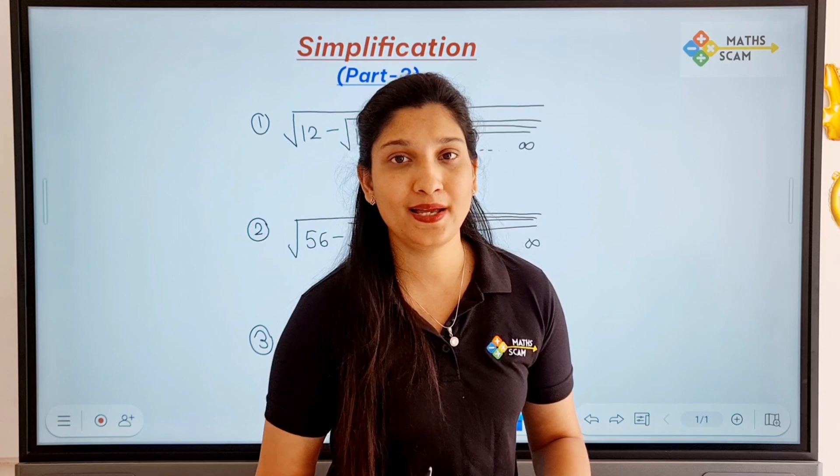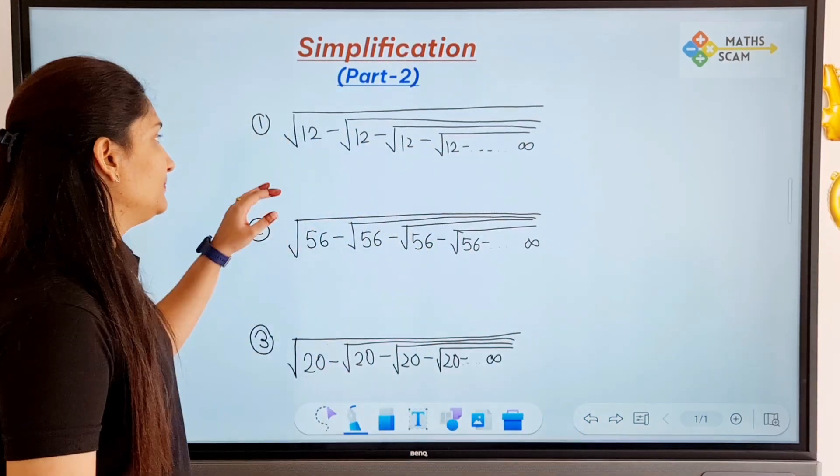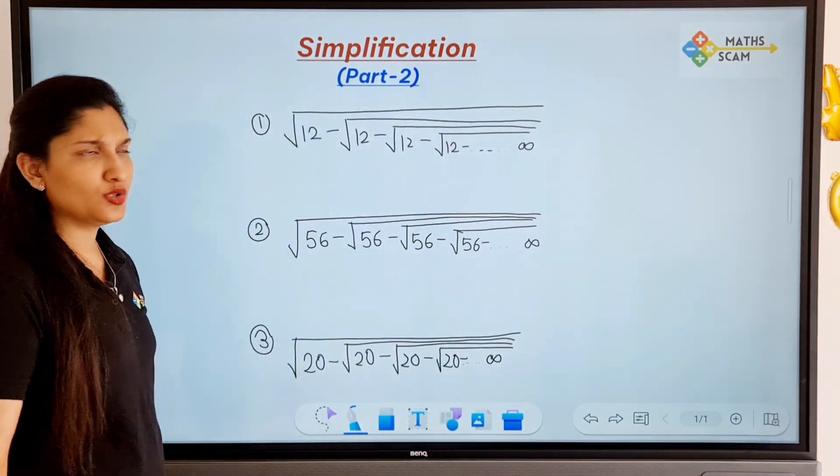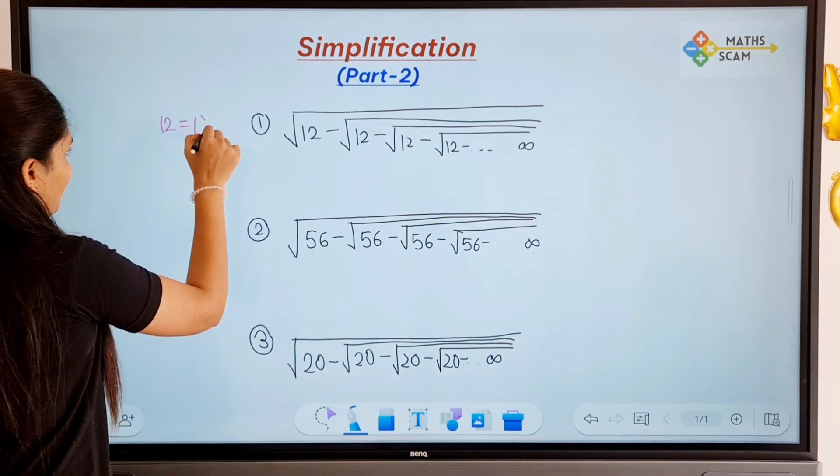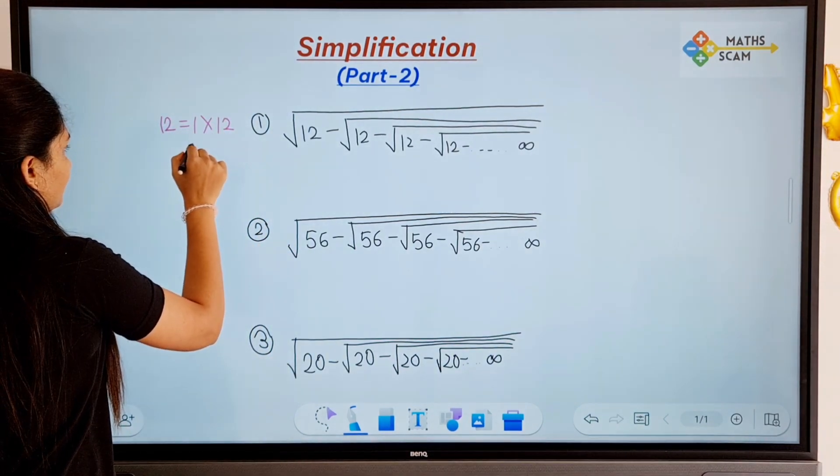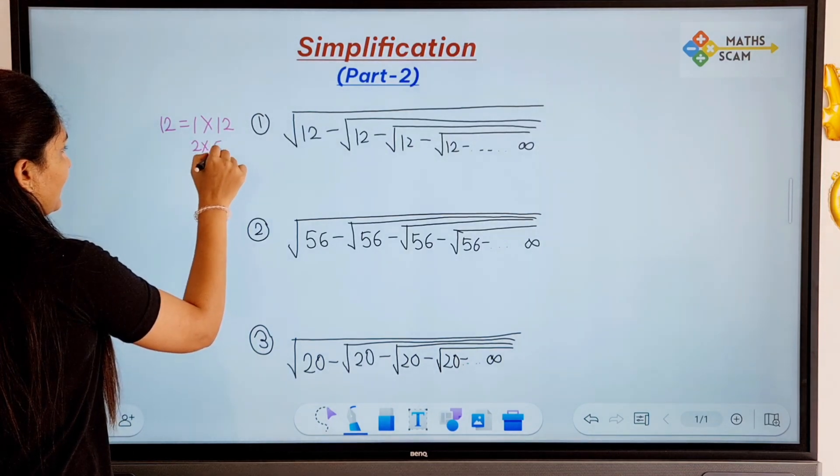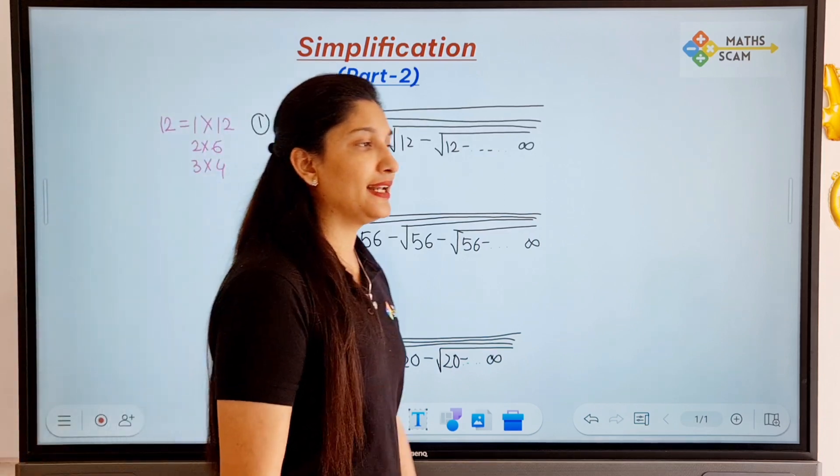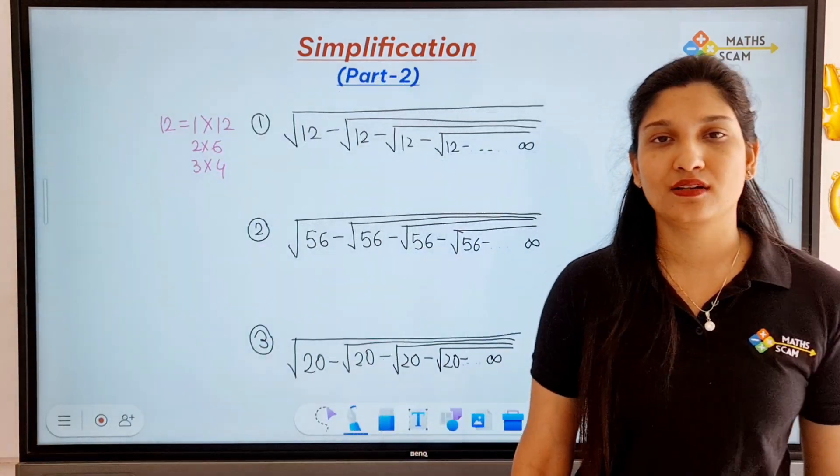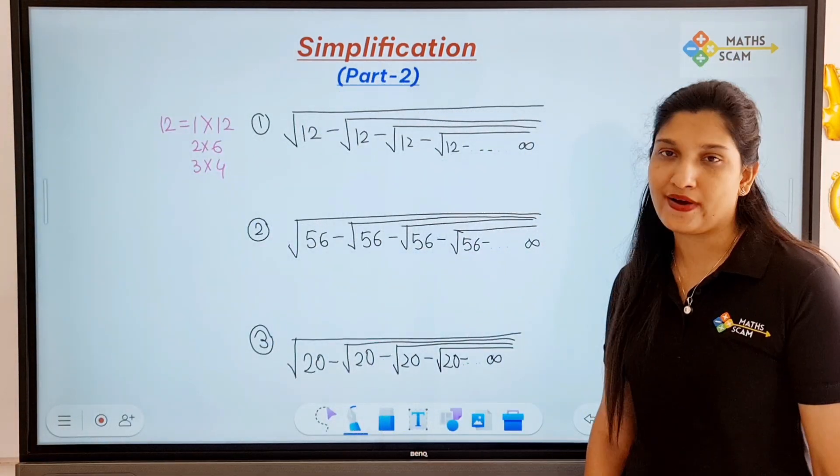So for the twelve, what are the consecutive factors of twelve? Let's find out the factors of twelve: one times twelve, then two times six, and then three times four. These are the factors of twelve. Out of all these three factors, let me know which are the consecutive factors, which factors come one after the other.